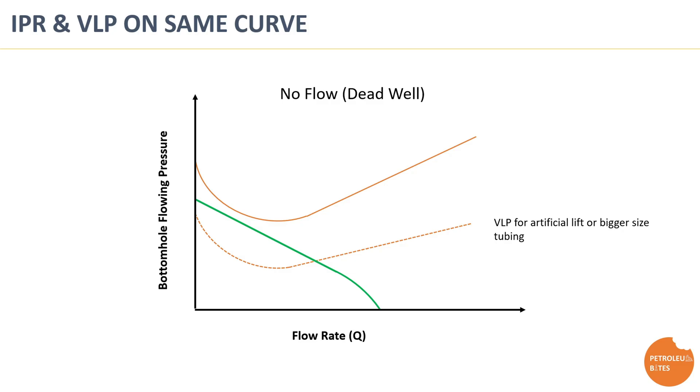To optimize well performance, we aim to balance between both inflow from the reservoir and the vertical lift constraint by adjusting the following parameters. 1. By pump optimization, selecting the right artificial lift method based on VLP and reservoir characteristics. 2. Wellbore maintenance, minimizing frictional losses through proper wellbore design and maintenance. 3. Production rate management, by adjusting the production rate based on the IPR to avoid overproducing and depleting the reservoir prematurely.